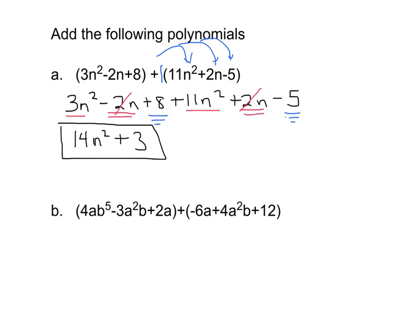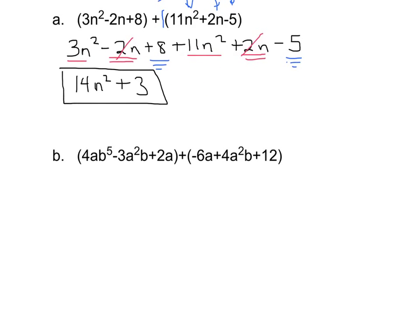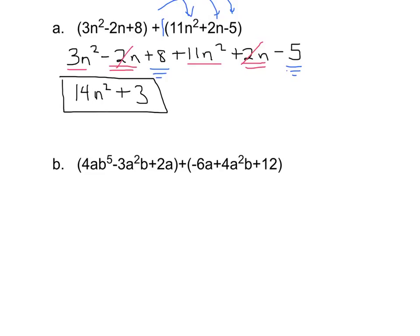Okay, so now let's move on to one that looks a little bit more difficult. Again, we're just distributing an imaginary one in here. So just imagine there's a one out there, distribute that one in these parentheses, and really all you're doing is dropping the parentheses. So we're going to have 4ab to the fifth.